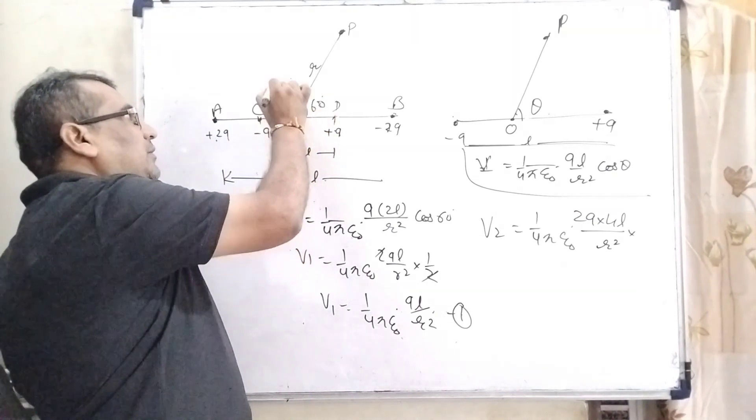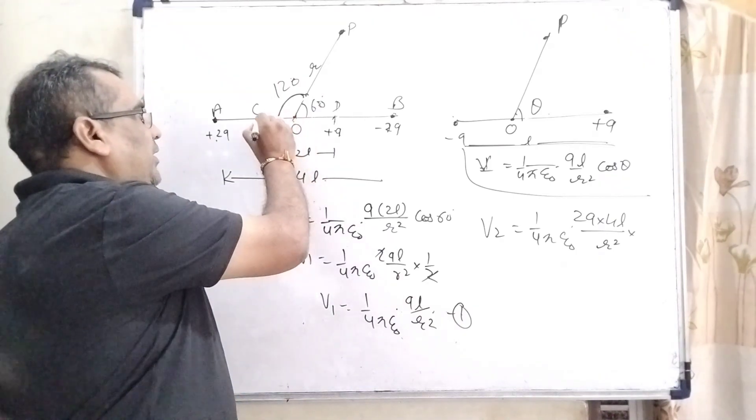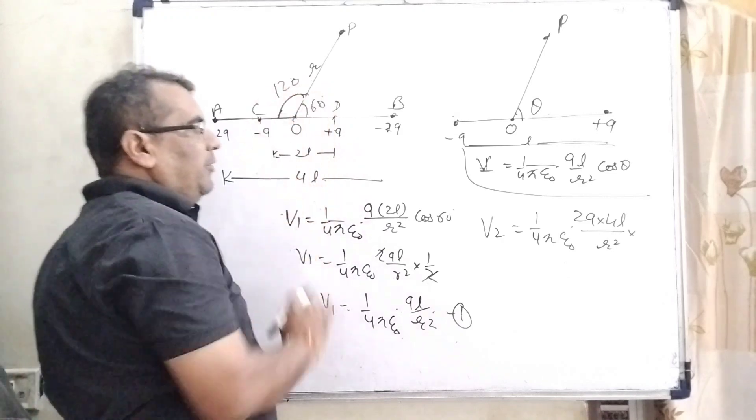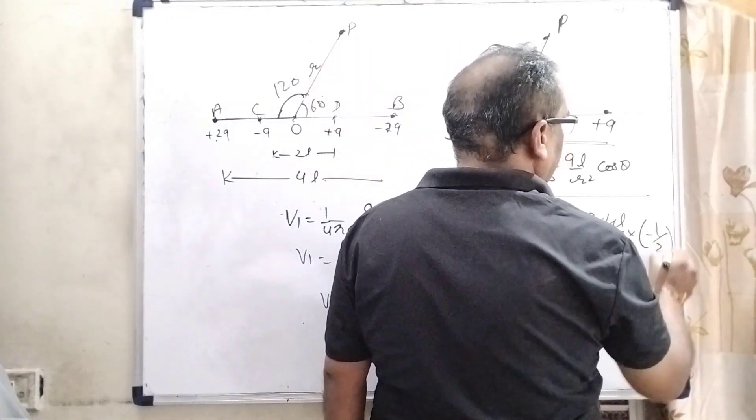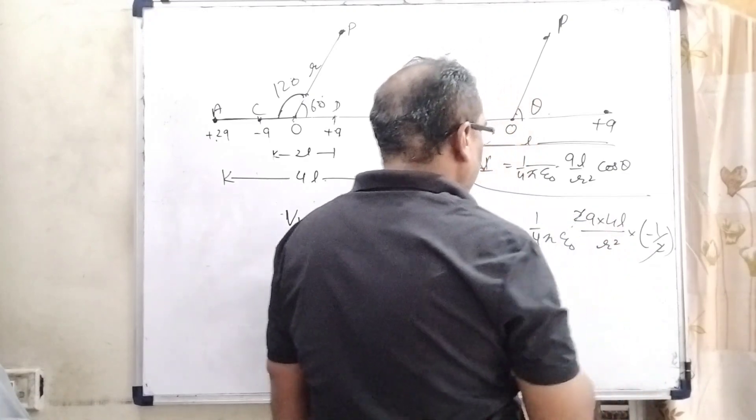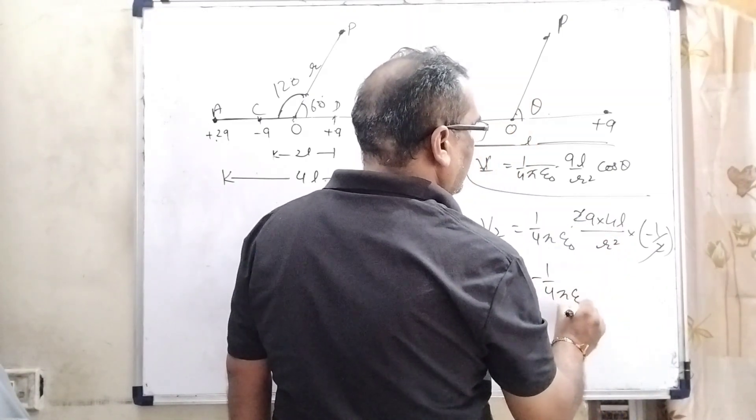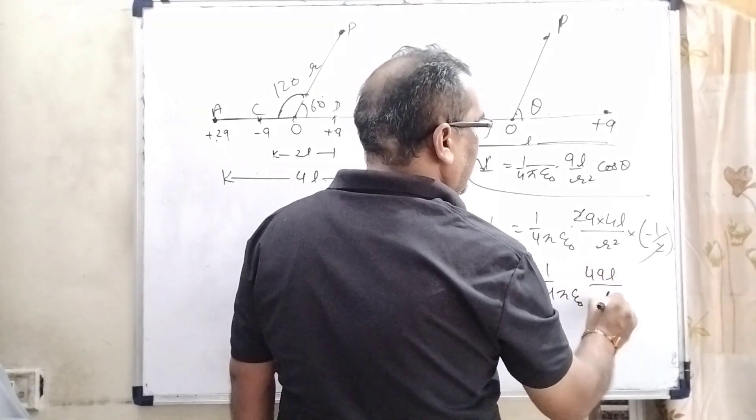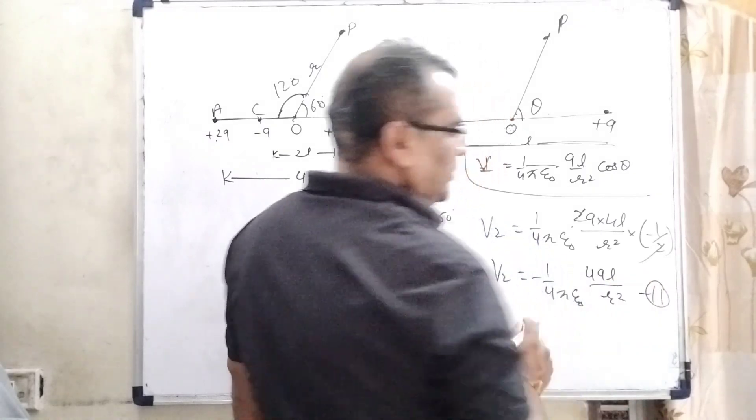Here cos theta, as we have given that is 60 degree, so by using linear pair this becomes 120. Here a very important thing: you should measure the angle from positive to that point. So, 120, cos 120 that is minus 1 by 2. Here 2 cancels out. So, V2 equals minus 1 upon 4 pi epsilon 0 and 4 QL by R square. This is the second equation.